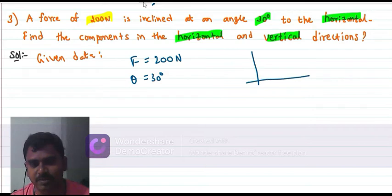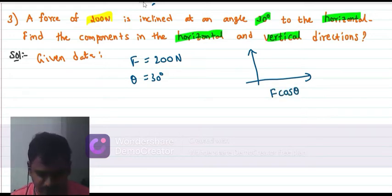We have to find the diagram. It is X axis and Y axis. Horizontal component is F cos theta, and vertical component is F sin theta.